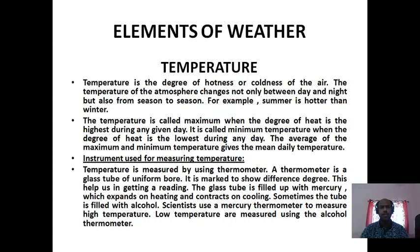The first element is temperature. Temperature is the degree of hotness or coolness of the air. The temperature of the atmosphere changes not only between day and night but also from season to season — for example, summer is hotter than winter. There are two kinds of temperature we can measure: maximum and minimum. The temperature is called maximum when the degree of heat is the highest during any given day. The average of the maximum and minimum temperature gives the mean daily temperature.